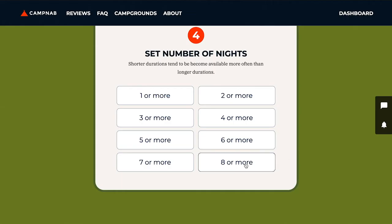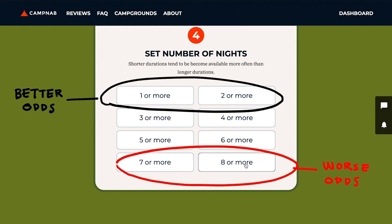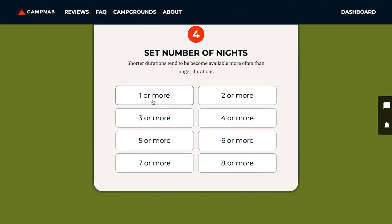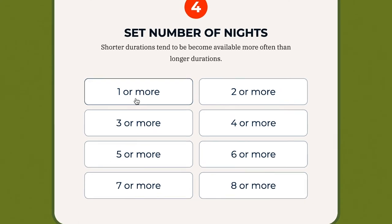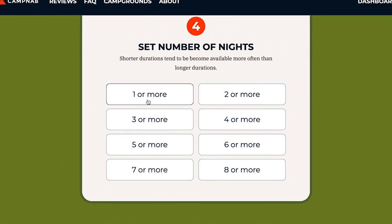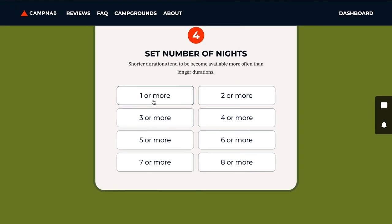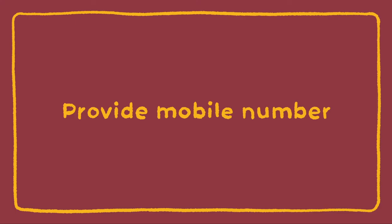It's very tempting to say you want to stay for eight or more nights, but this reduces the odds of getting a spot. If you select one or more nights, you will still be notified of any opening even if it is of a longer duration. Selecting one or two nights is really going to bump up your chances of getting the spot you want, so I'm going to select one or more.